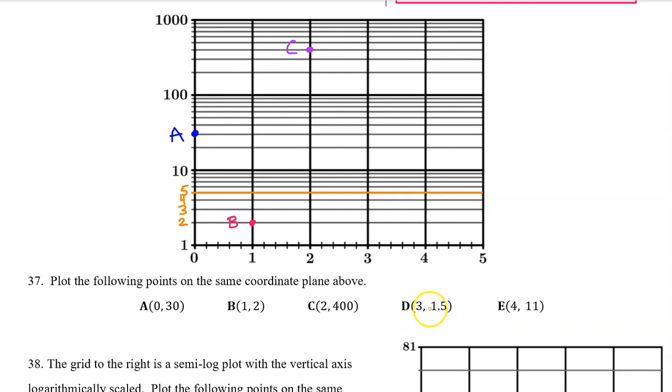Before we graph point D, I need to emphasize something to you. Notice that on a semi-log graph, the 5 is not right in the middle like we're used to. The 5 is about two-thirds of the way up, much closer to 10 than it is to 1. And the number that is closest to the middle is the 3. It's a little bit below the middle, but 3 is the closest to the middle.